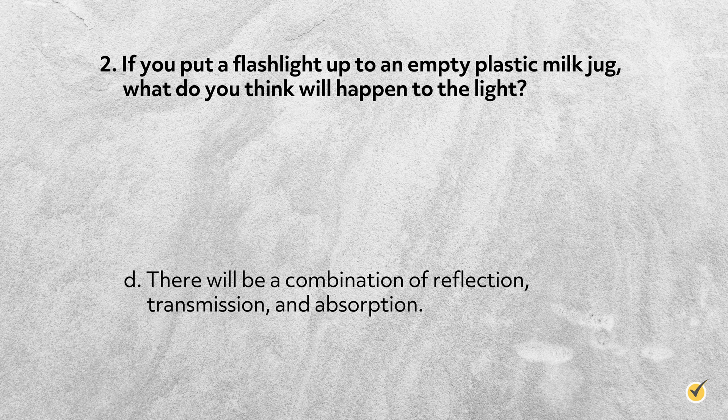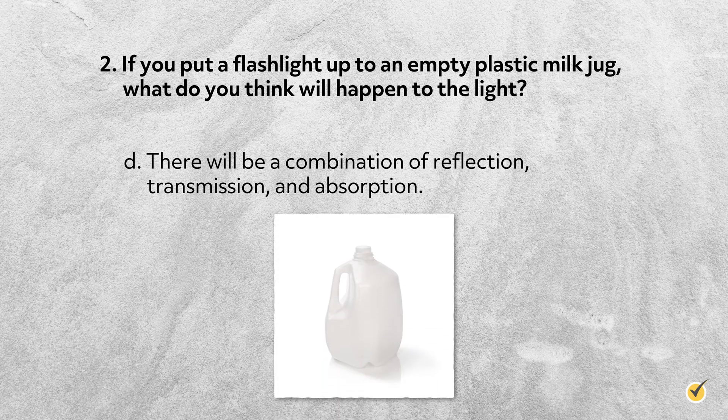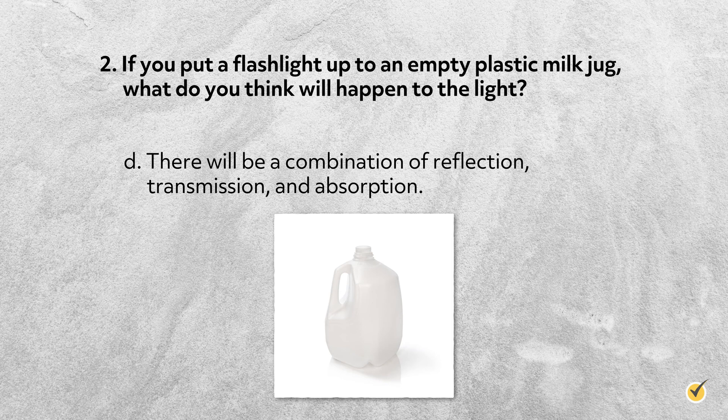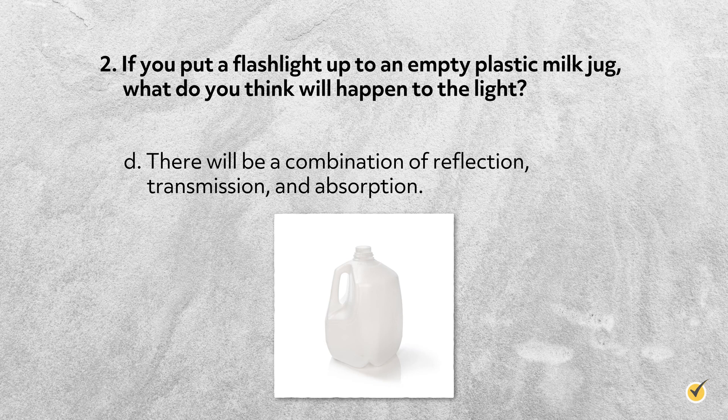The correct answer is D. Let's see what this actually looks like. It will be obvious that some light is transmitted through the partially opaque plastic. You can see it on the other side. And you can also see some light shining, or reflecting, off of the spot you're shining the light. Absorption may not be as obvious, but if you leave a milk jug under a bright light for too long, you'll notice that it will start to heat up.